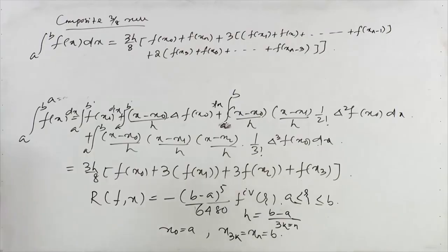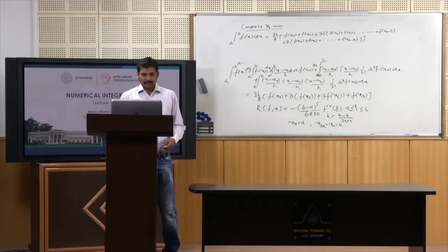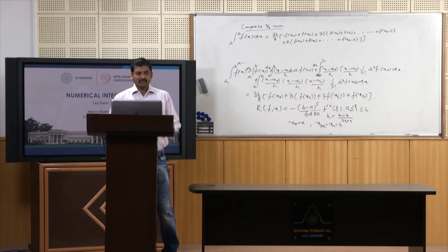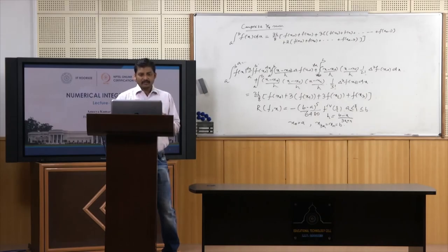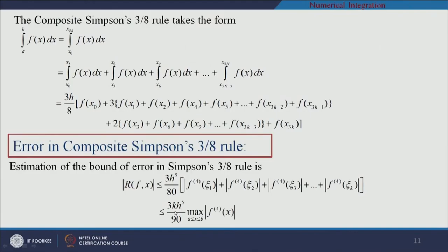This is the composite Simpson's 3/8 rule. The final error term can be written as (3/90)k·h^5 times max|f^(4)(x)| for x in [a, b], where k is the number of groups of 3 sub-intervals.